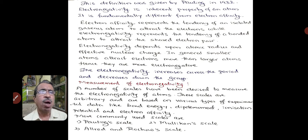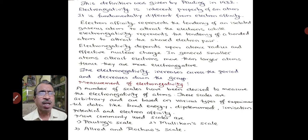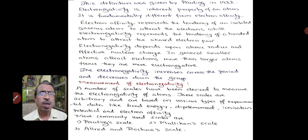Electronegativity depends upon atomic radius and effective nuclear charge. In general, smaller atoms attract electrons more than larger atoms; hence they are more electronegative. The electronegativity increases across the period and decreases down the group. A number of scales have been devised to measure the electronegativity of atoms. These scales are arbitrary and are based on various types of experimental data like bond energy, dipole moment, ionization potential, and electron affinity.